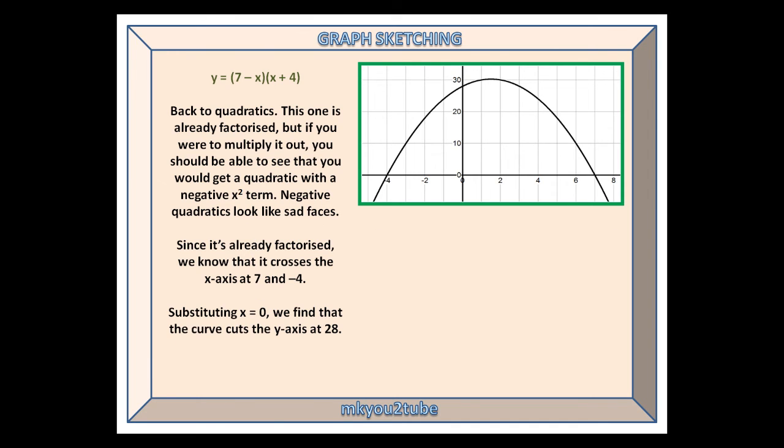Our fourth curve is y equals (7 minus x) times (x plus 4). Back to quadratics. This one is already factorised, but if you were to multiply it out, you should be able to see that you would get a quadratic with a negative x-squared term. Negative quadratics look like sad faces.